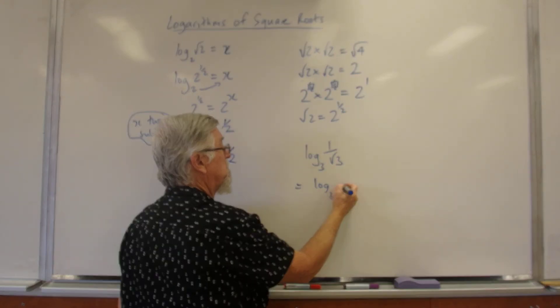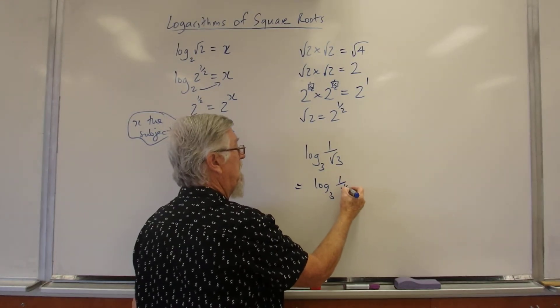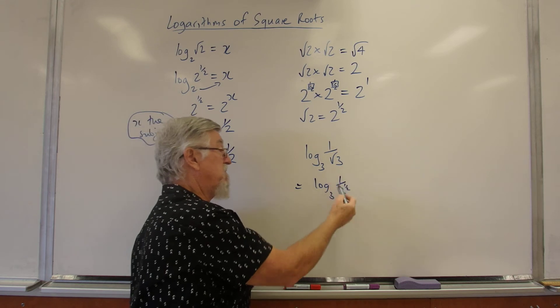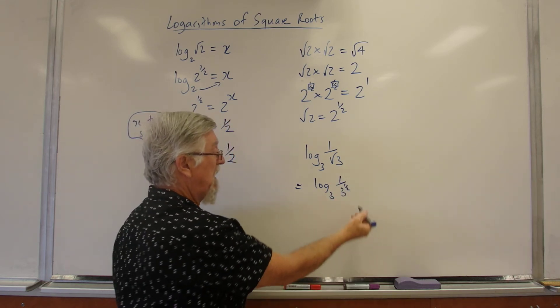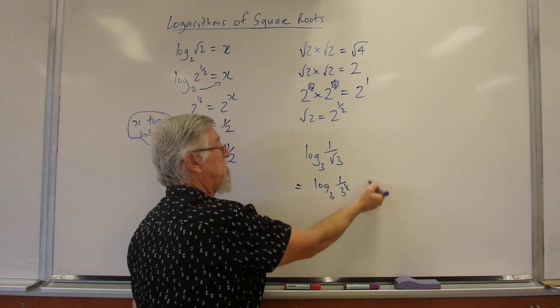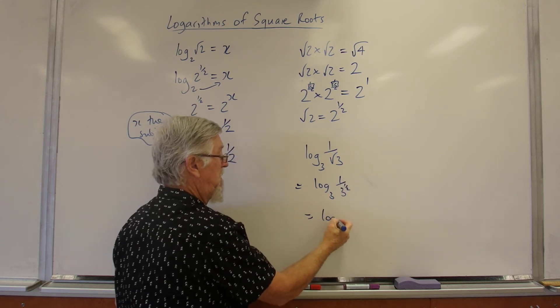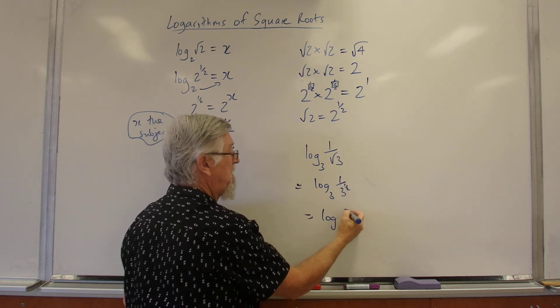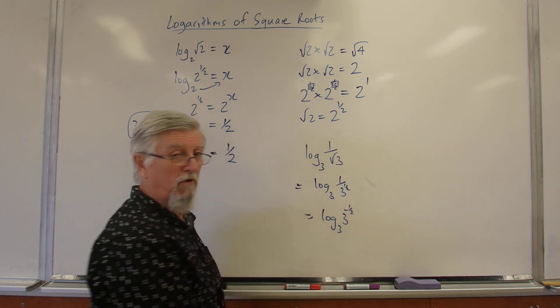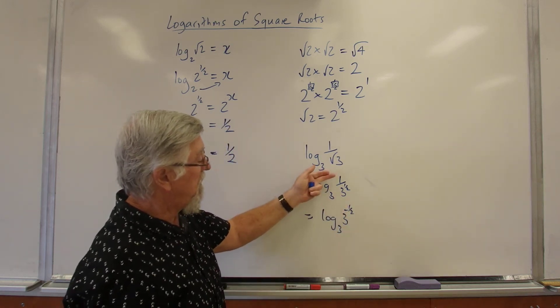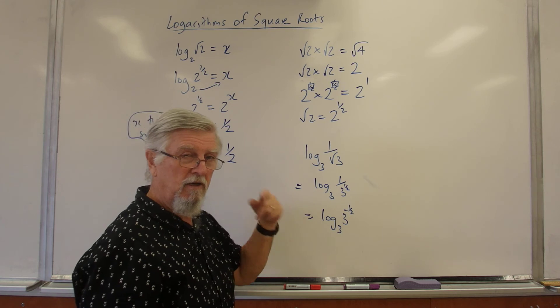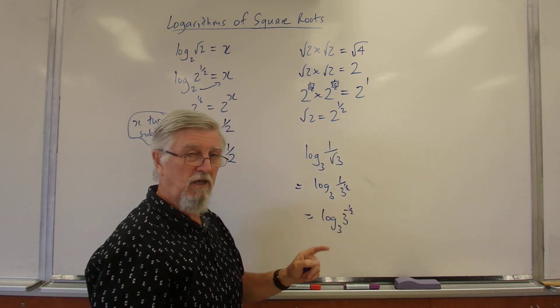So I've got the log with the base of 3, of 1 over 3 to the half. Because I know the square root of 3 can be just written as 3 to the half. If I want to move from the denominator to the numerator, what happens to the power, the index, it becomes a negative. By the way, with index laws, if you move from the numerator to the denominator, the sign will also change on the index.